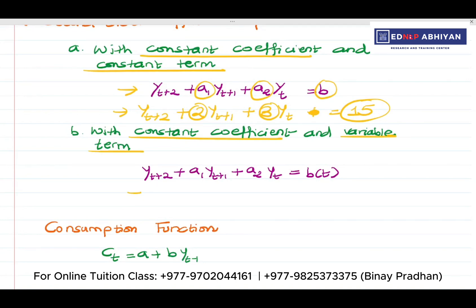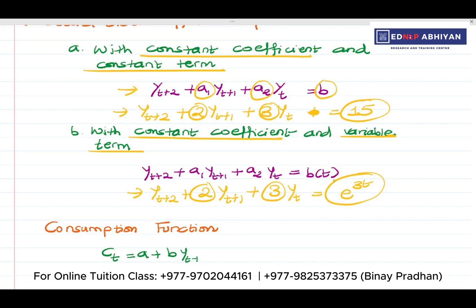So it becomes a case of constant coefficient and variable term. For example: yt+2 plus 2 times yt+1 plus 3 times yt equals e to the power 3t. Here 2 and 3 are our constant coefficients, and e to the power 3t is our variable term — it is not a constant term.